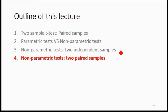We have just discussed two independent sample non-parametric tests, and you can see that the calculation is very easy. You don't have to calculate the mean or the variance — you just need to assign the rank. So for all your data sets, the first thing you have to do is arrange your data for each sample.